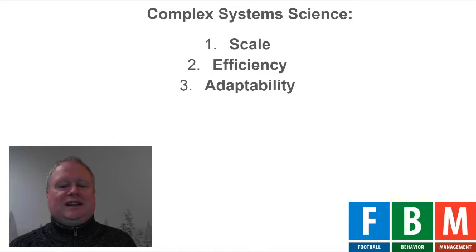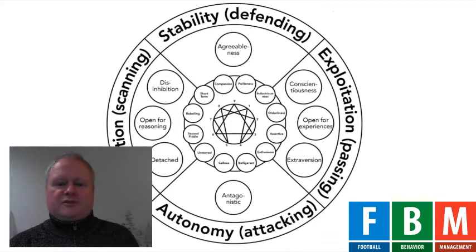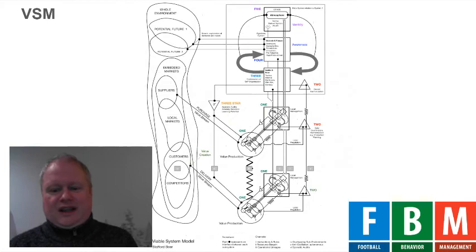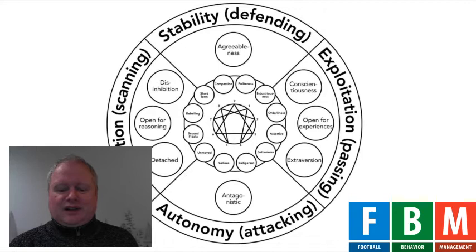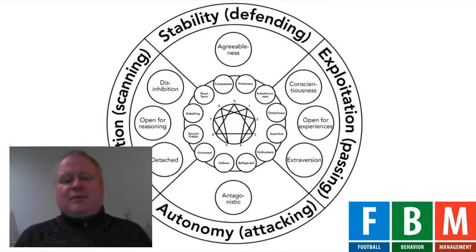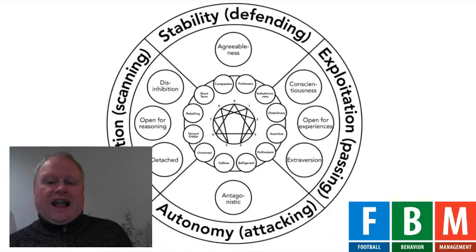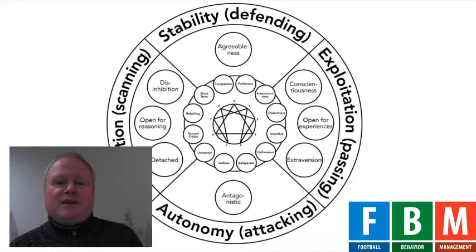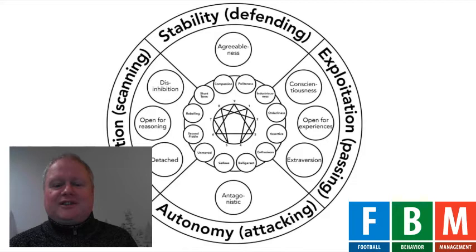Basically there are four major things our brain does: stability, exploitation, autonomy, and exploration. Autonomy here is put against stability — and stability here means social stability. This is what scales: social stability is important in order to be able to work with bigger teams and more people. Most people in the club need to score high on social stability in their brain type. If there's not enough social stability within the club, then the club is going to fail.